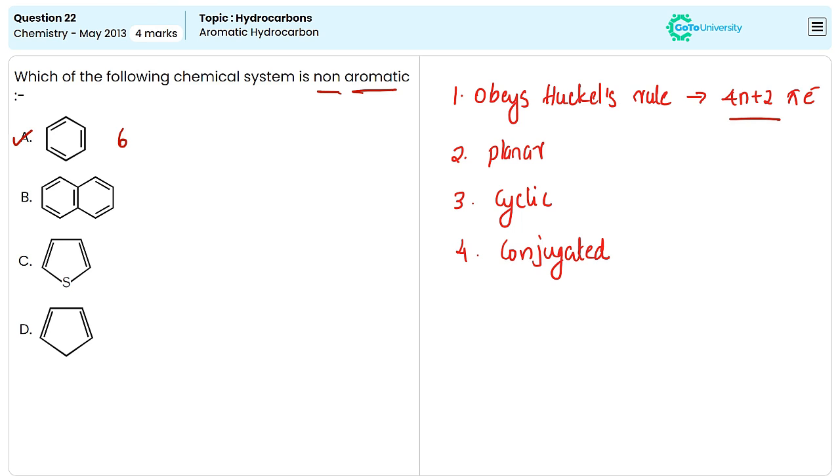And the second one is again an aromatic compound, because this obeys all the rules of aromaticity. The third molecule is again aromatic, because it obeys Huckel's rules. And they are planar, cyclic, as well as it is a conjugated system.